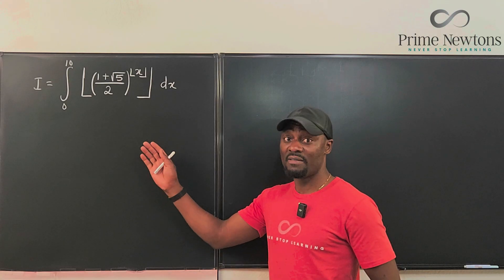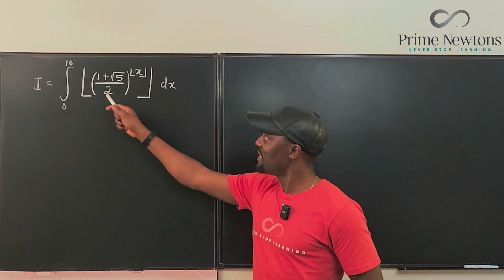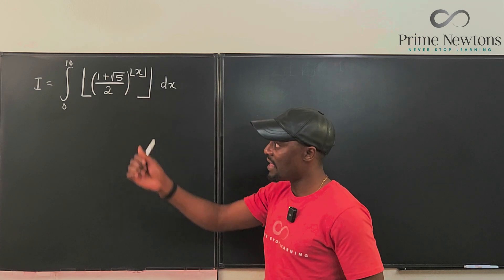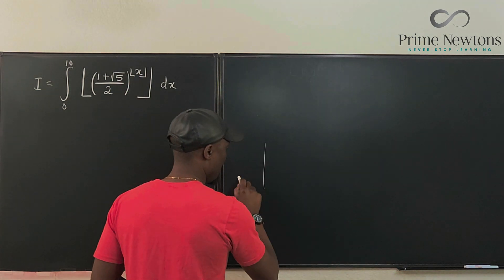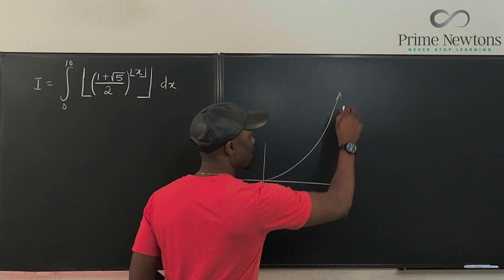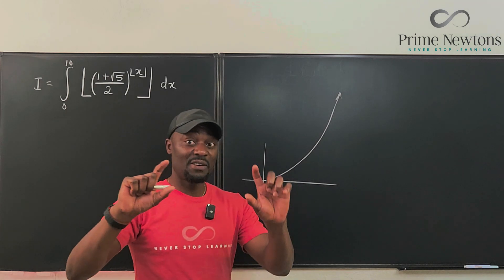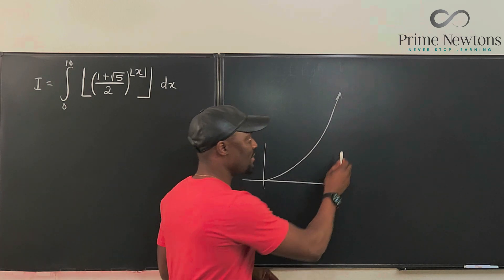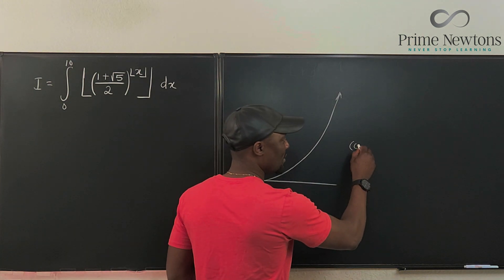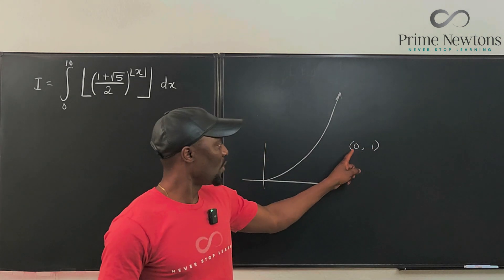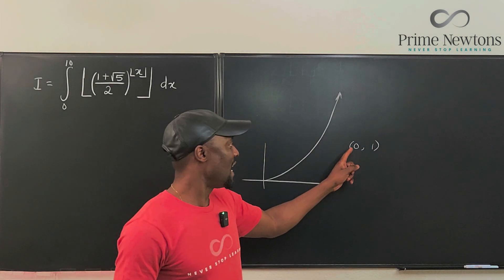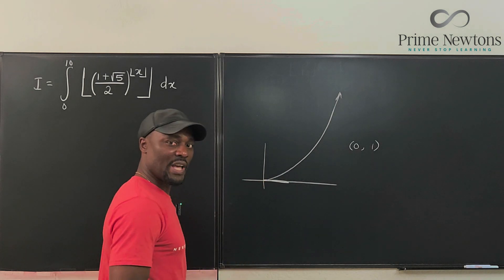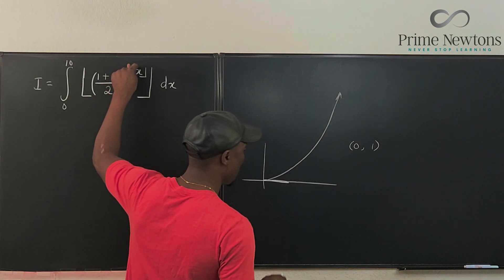Looking at the problem we have, if this was not a floor, then this is supposed to be an exponential function. This would be the base and this would be the exponent. But because the exponent is a floor, the floor stays constant for a while. Every value between zero and one is going to have a floor of zero because that is the integer less than anything in this interval. So you're just going to have a flat line. But because it is this raised to power zero, it's going to be one.